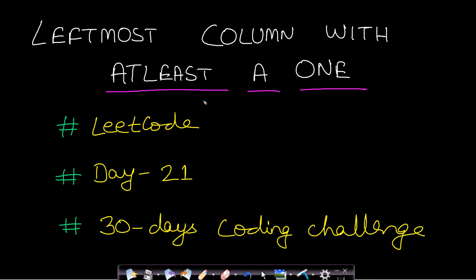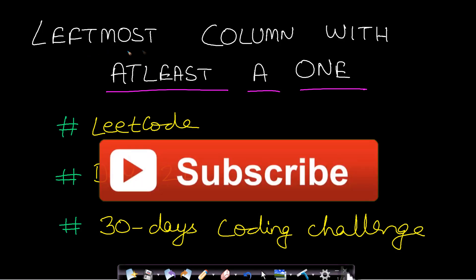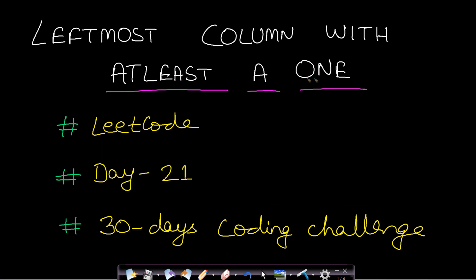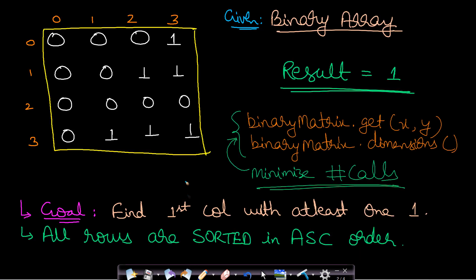Hello guys, welcome back to TechDose. In this video we will see how to find the leftmost column with at least a 1 in a binary matrix. This is from LeetCode day 21 of the 30 days coding challenge. Let us look at the problem statement. We are given a binary array and we are required to find the first column with at least a 1.